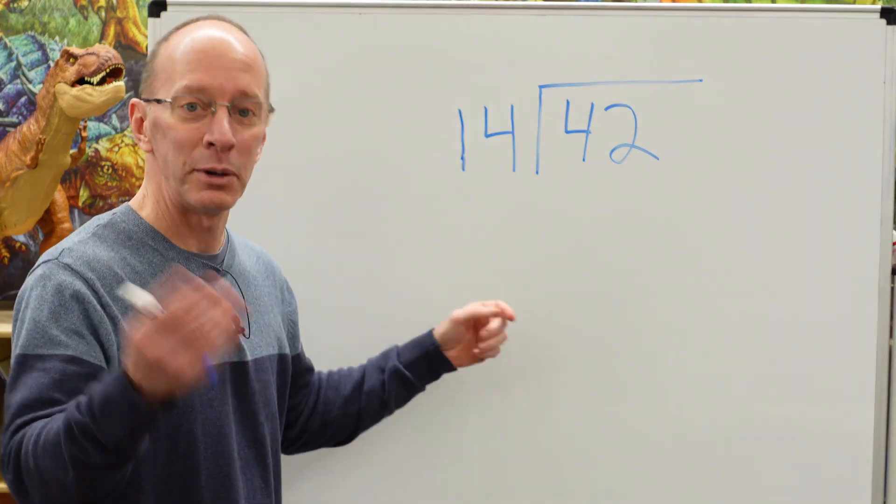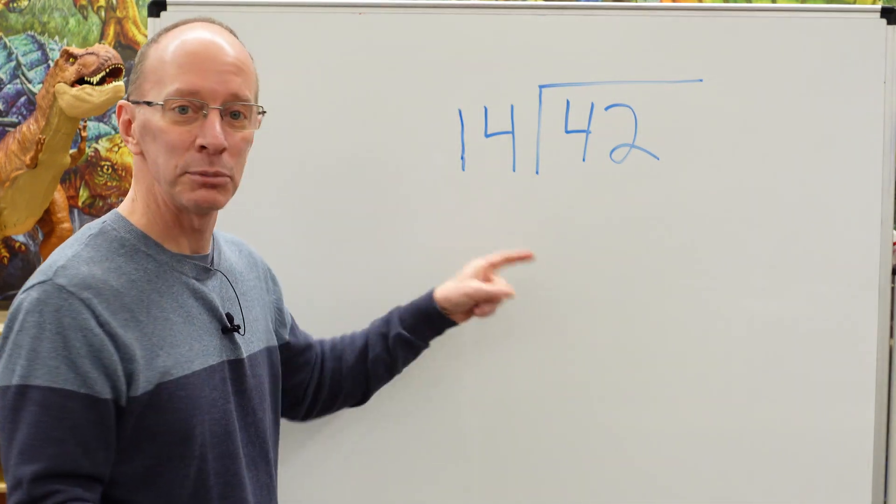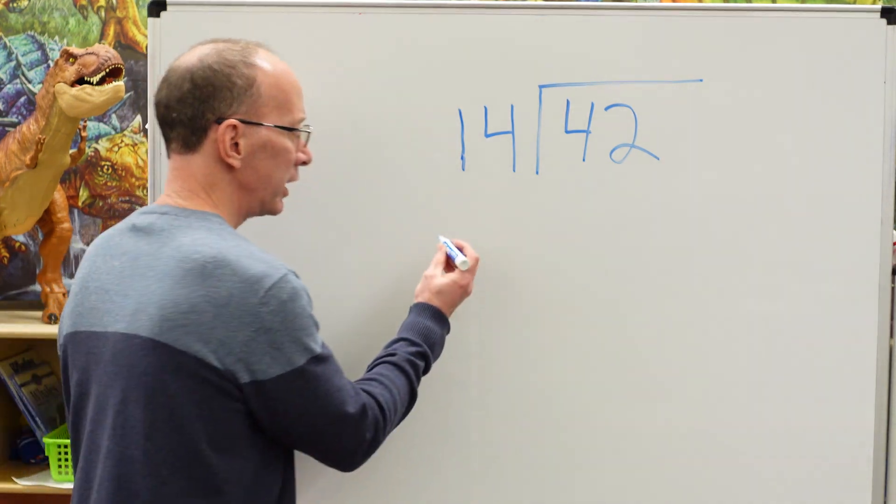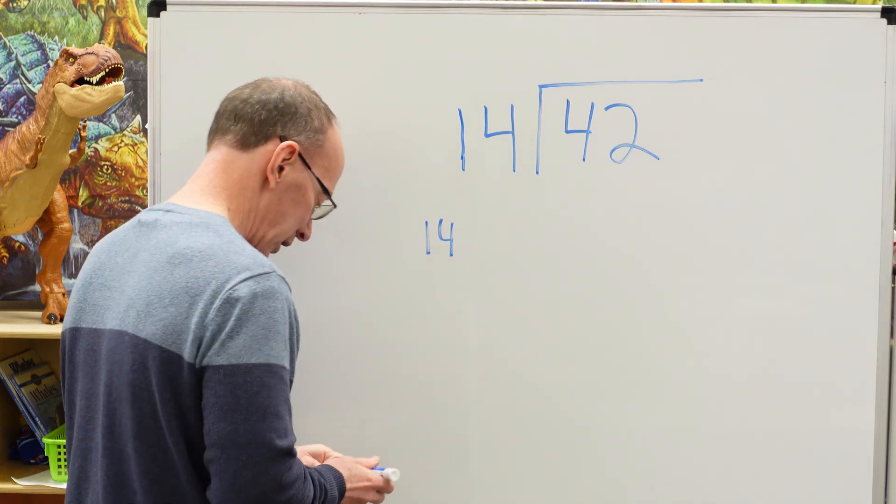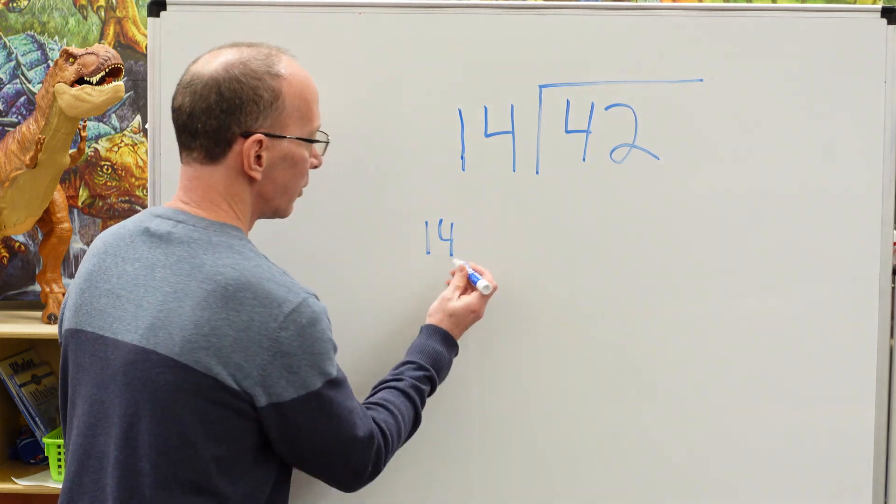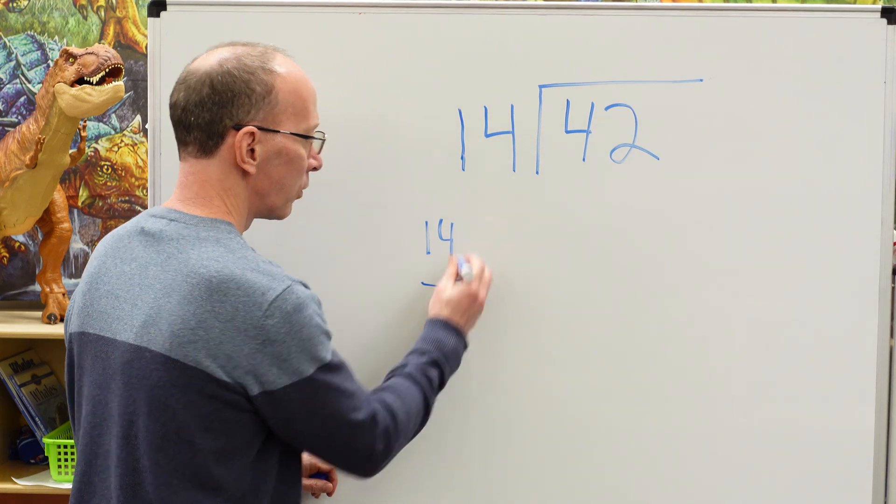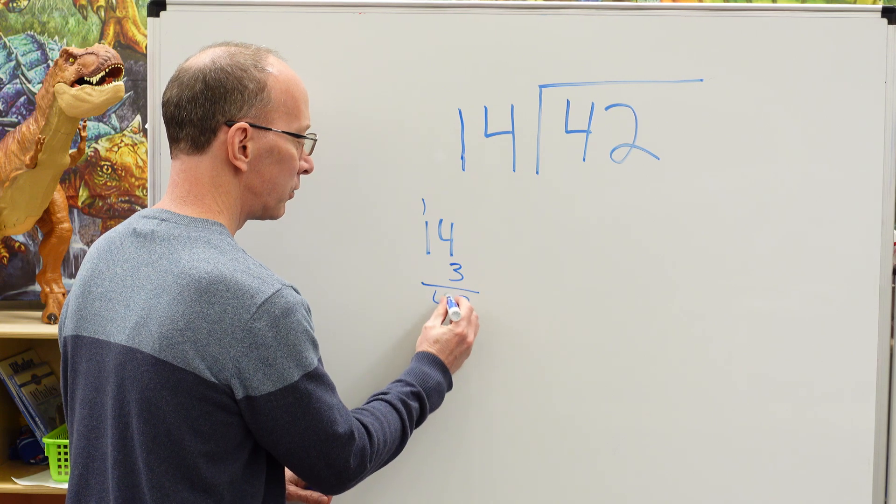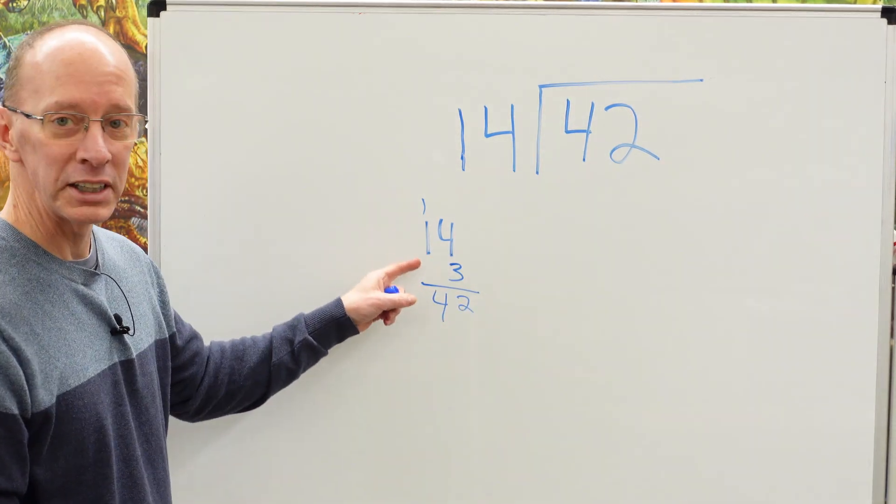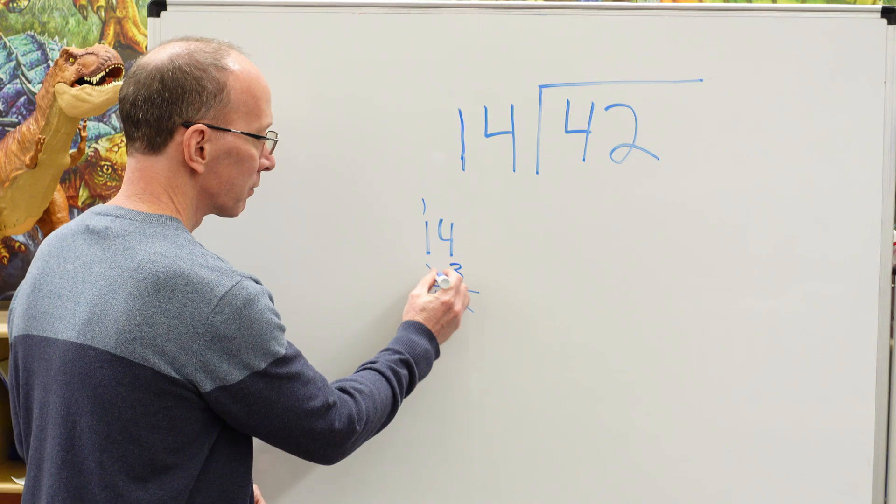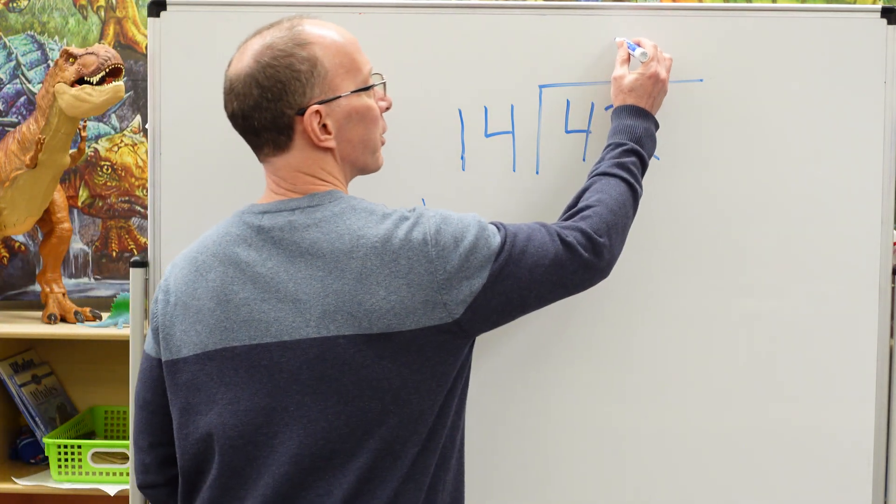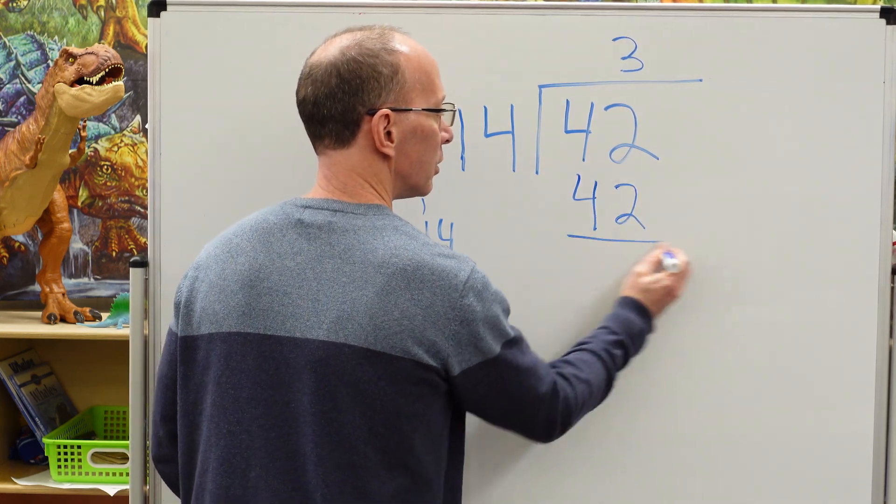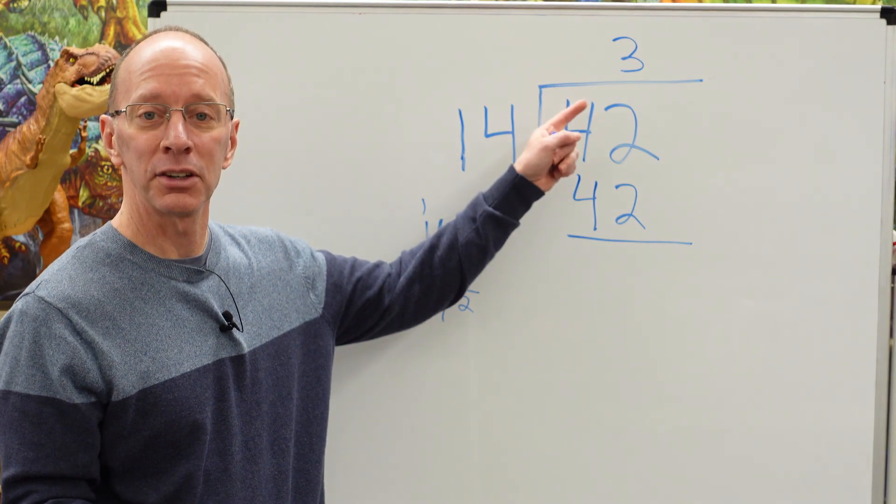So 14 times 1 would be 14. 14 times 2 is 28. 14 times 3 - you might have to do a little figuring here. 4 times 3 is 12, carry the 1. 3 times 1 is 3 plus the 1 is 4. So 14 times 3 equals 42. I'm going to put the 3 right here. 3 times 14 is 42, with no remainder. That's our answer.